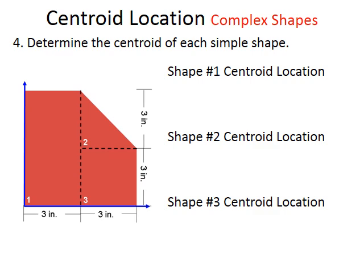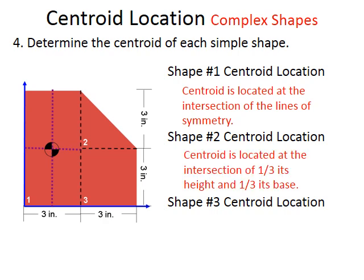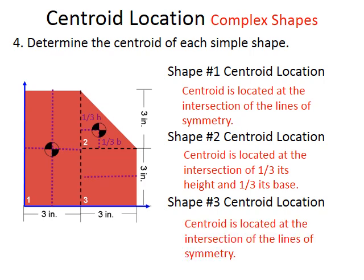Next, we want to look at what the centroid locations are for each of the simple shapes we've determined. For shape one, we know that there's some symmetry and it's right in the middle of the rectangle. For shape two, we know the formula one-third base and one-third height. For the square, we know it's right in the middle.